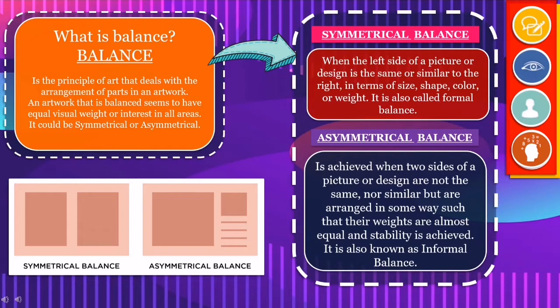Symmetrical balance is when the left side of a picture or design is the same or similar to the right in terms of size, shape, color, or weight. It is also called formal balance. While asymmetrical balance is achieved when two sides of a picture or design are not the same, nor similar, but are arranged in some way such that their weights are almost equal and stability is achieved. It is also known as informal balance.